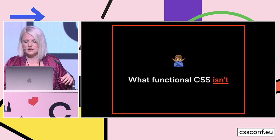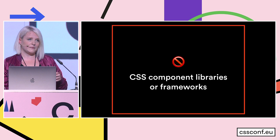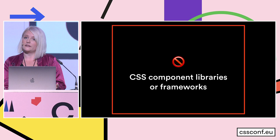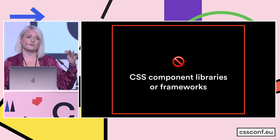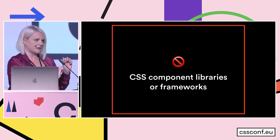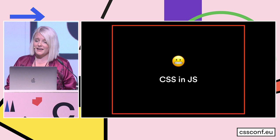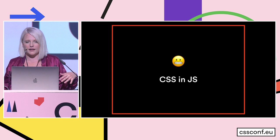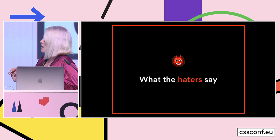Just to make sure we're on the same page about what functional CSS isn't for today's talk: I'm not referring to CSS component libraries or frameworks, meaning things like Bootstrap or Angular Material where there's full-on components given to you. Those libraries often do leverage functional CSS as part of what they offer, but I'm just talking about the classes themselves — those discrete CSS classes, not full-on components. And since the word functional is in there, I want to be sure everyone knows we're not talking about CSS-in-JS today.